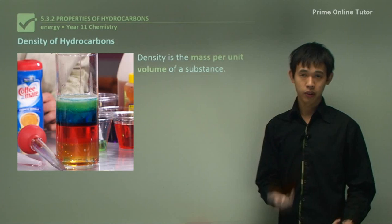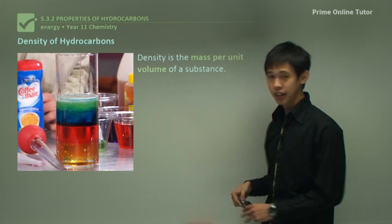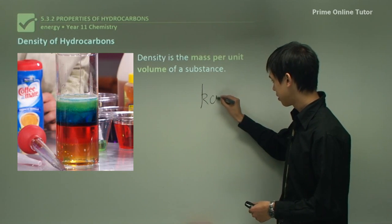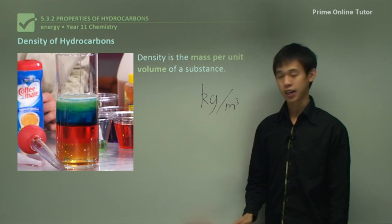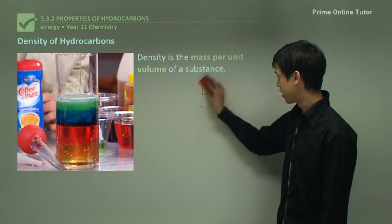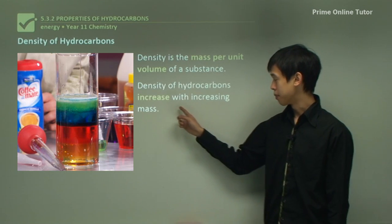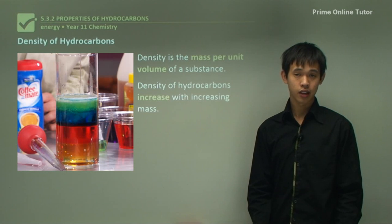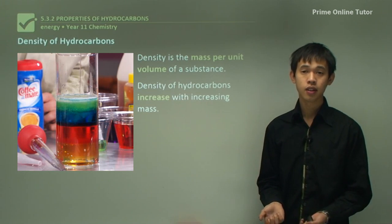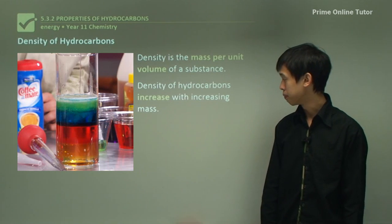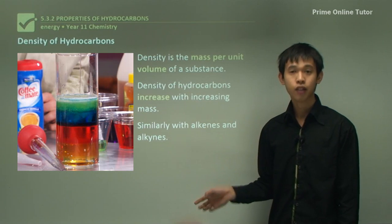The next property we'd like to talk about is density. Density is simply the mass per unit volume — in the SI system, kilograms per metre cubed. The density of hydrocarbons increases with increasing mass, for the same reason that boiling point increases: there are stronger intermolecular forces because there are more electrons and more protons available. The same sort of system happens with alkenes and alkynes for the same reason.